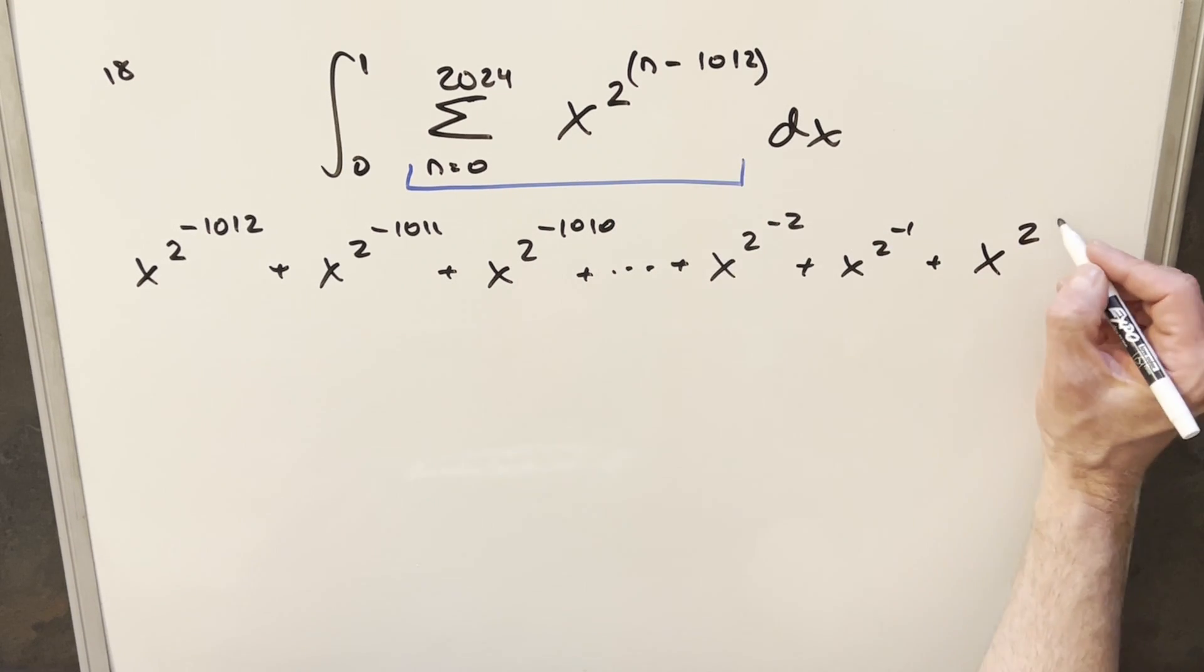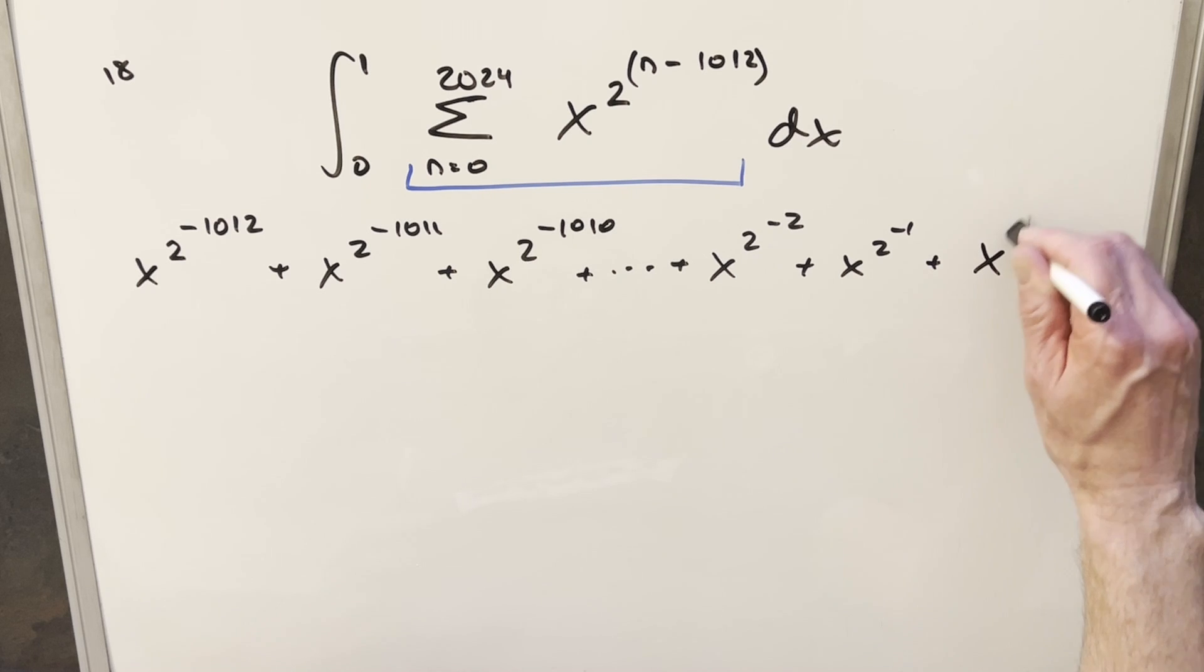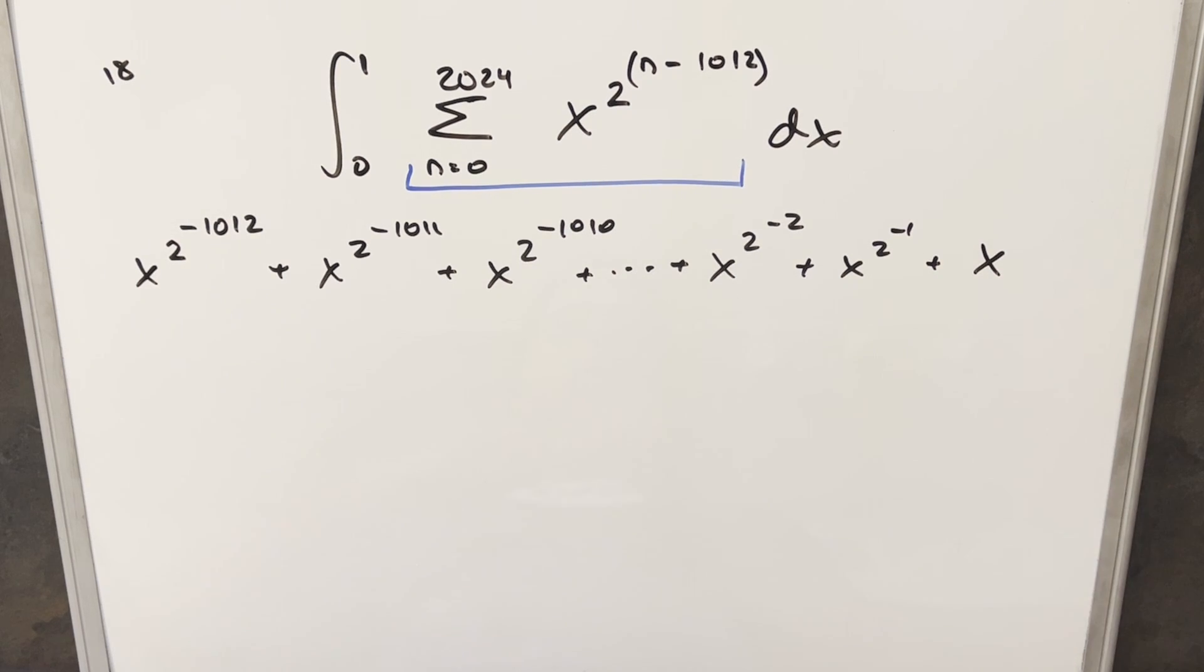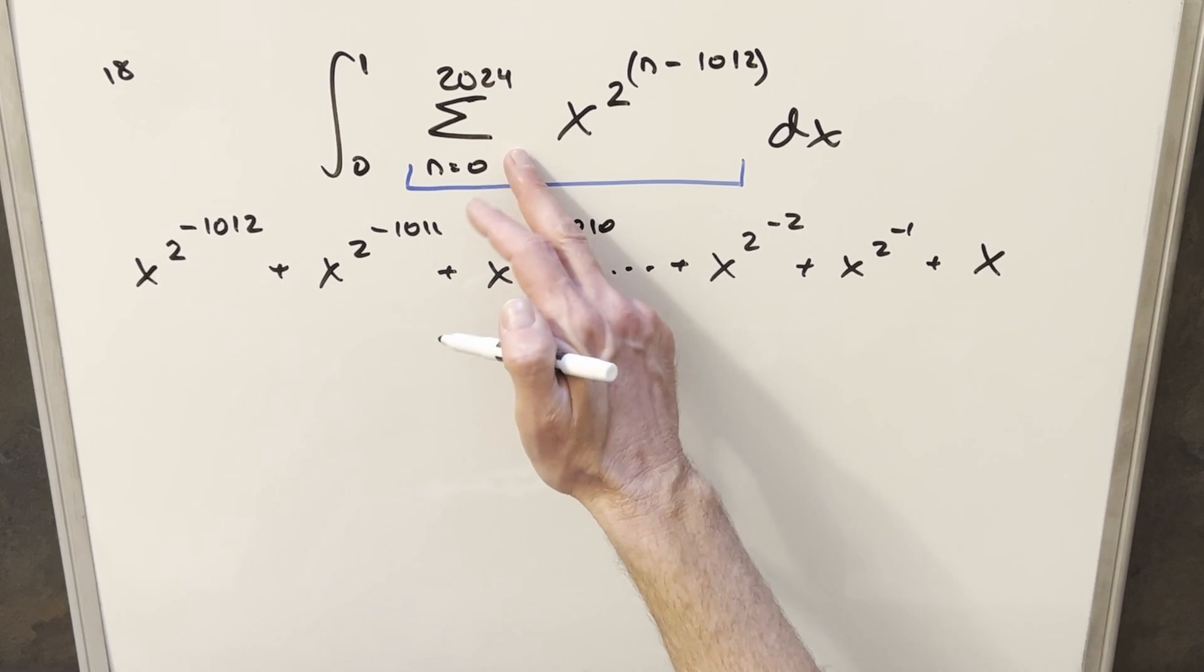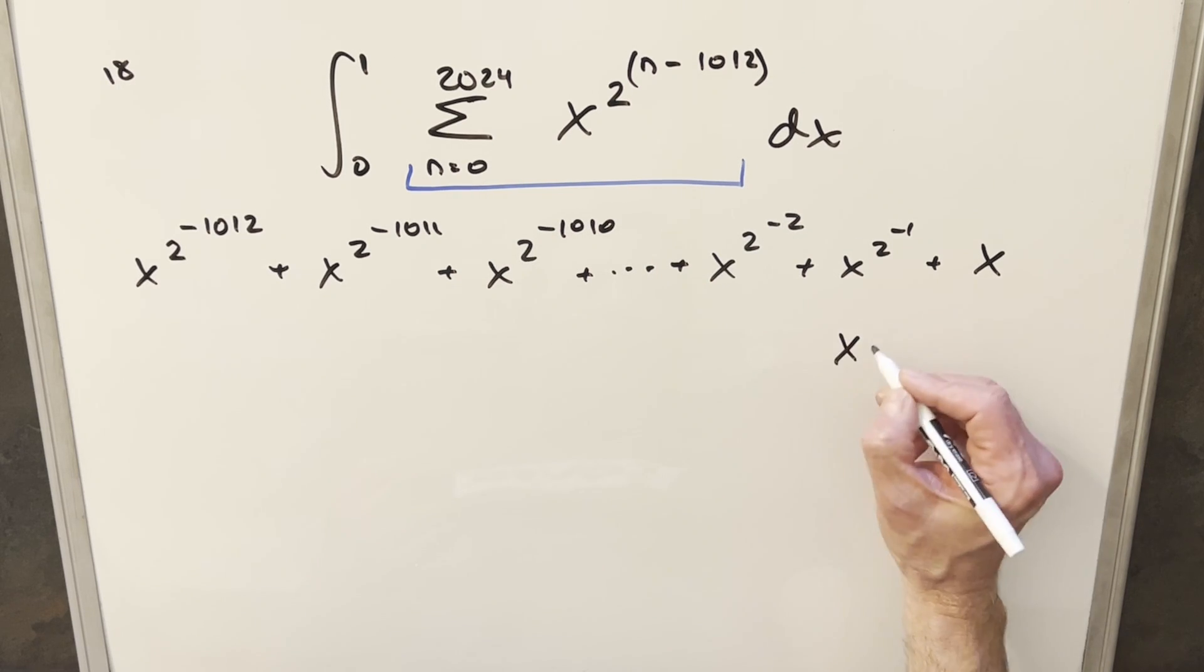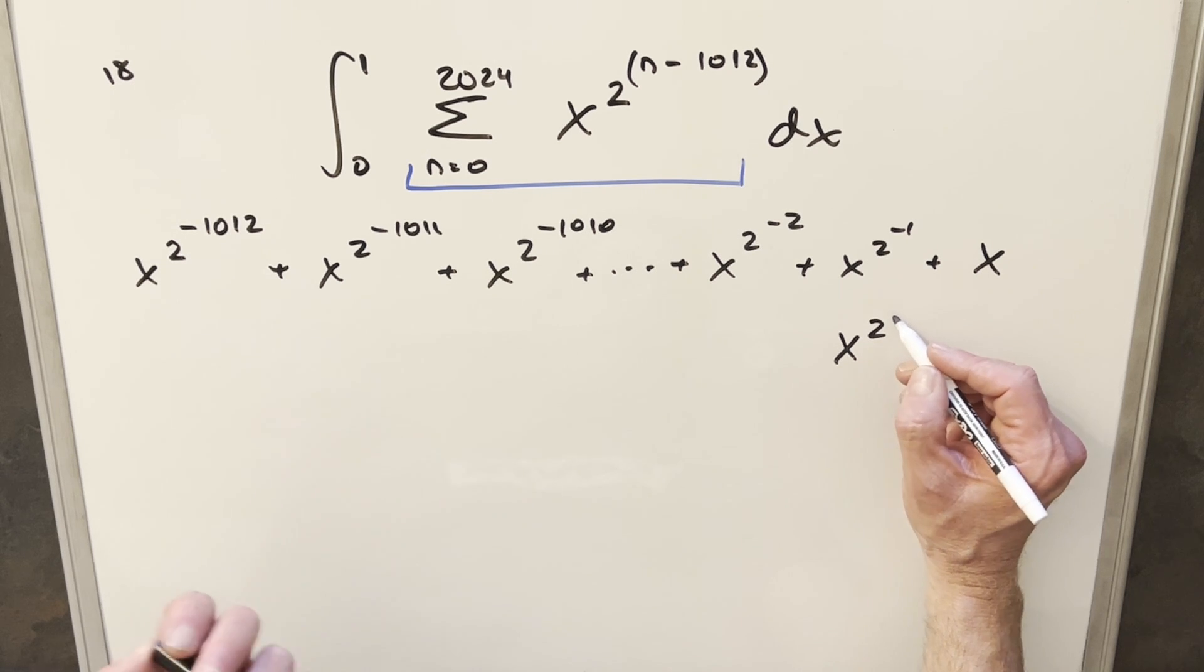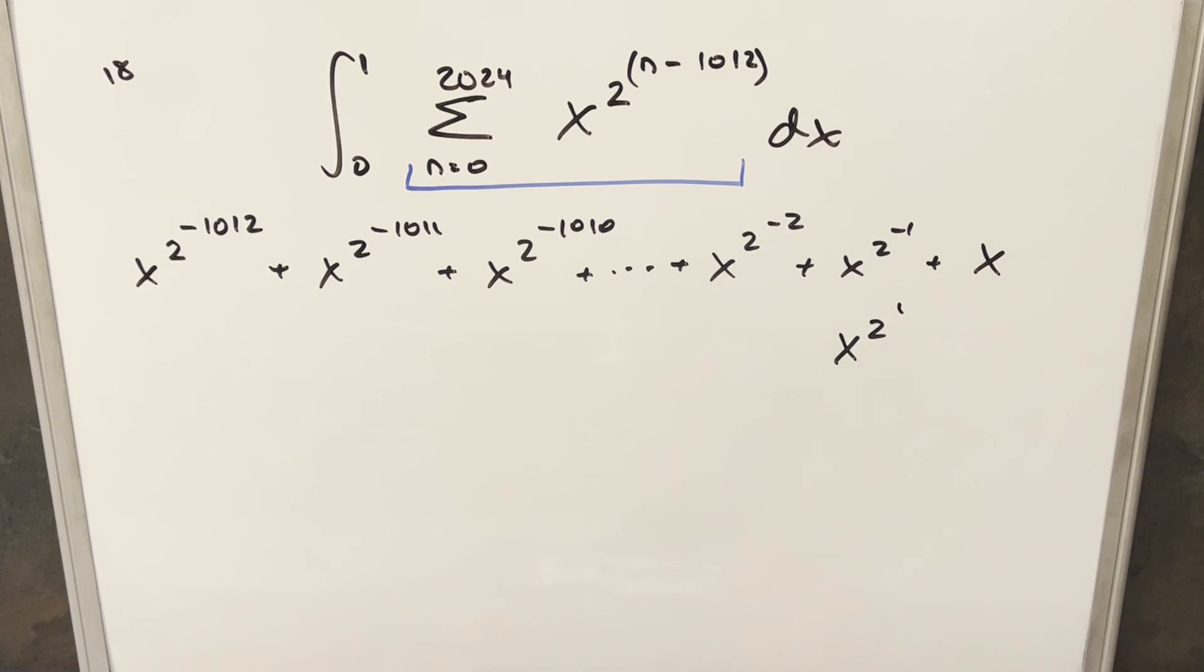Then this exponent is going to become 0. But with 2 to the 0 in the exponent, that's just 1. So I can just write this as x. Then I'll continue. Now when n is 1013, we're going to have x to the 2. If we plug 1013 in here, this exponent becomes 1. We're going to have 2 to the 1. I'll write it as 2 to the 1.